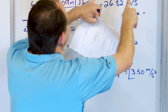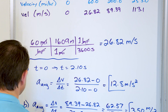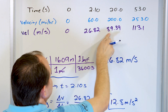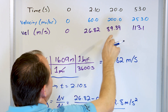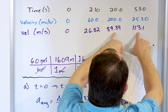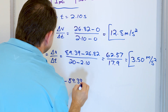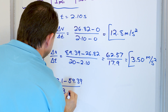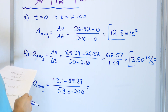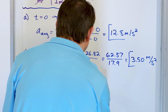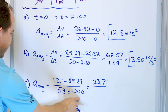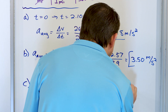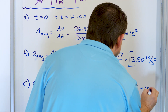For the third region from 20 to 53 seconds, average acceleration equals ΔV ÷ ΔT. Delta V is 113.1 minus 89.39 = 23.71, and delta T is 53 minus 20 = 33. So 23.71 ÷ 33 = 0.7185 meters per second squared. That's the acceleration in the third interval — the smallest of all three.